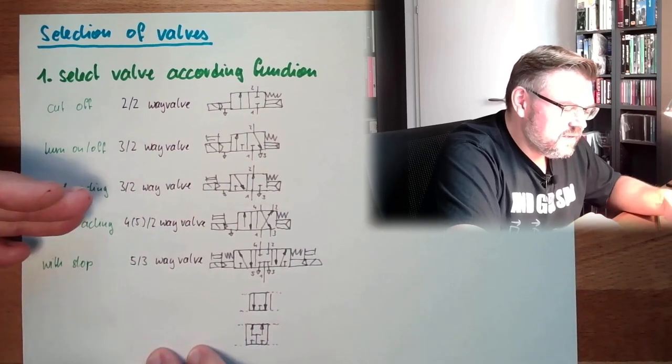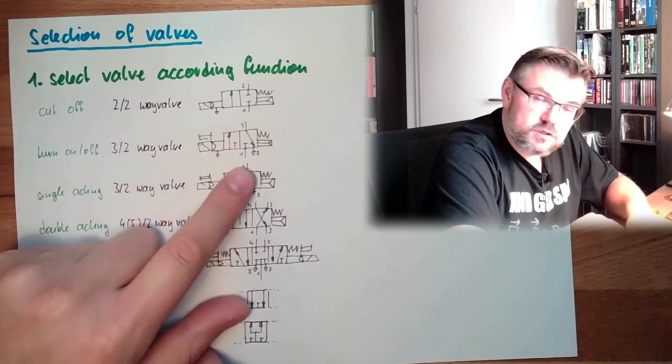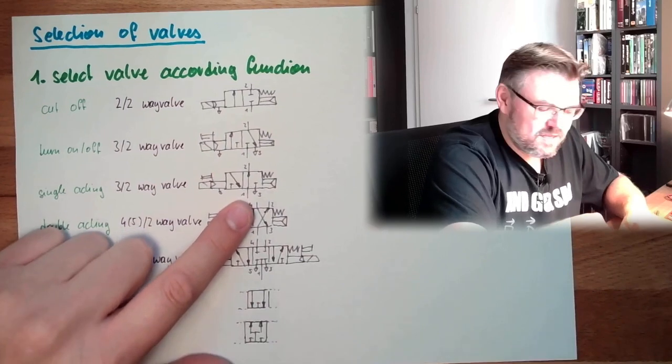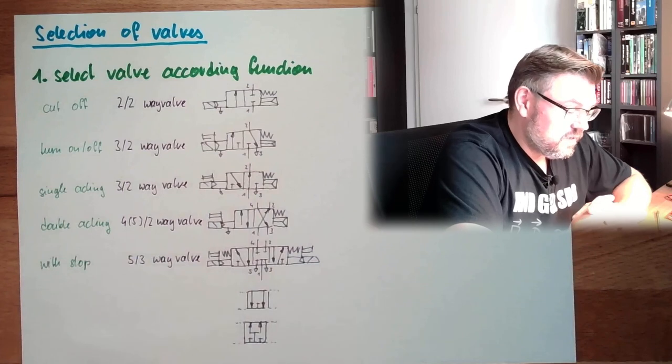Single-acting cylinders, we said 3/2 way valve is sufficient. I have used another type. You see the rest position is different here - locked rest position, here with flow rest position. It does not really matter, whatever your function is necessary.